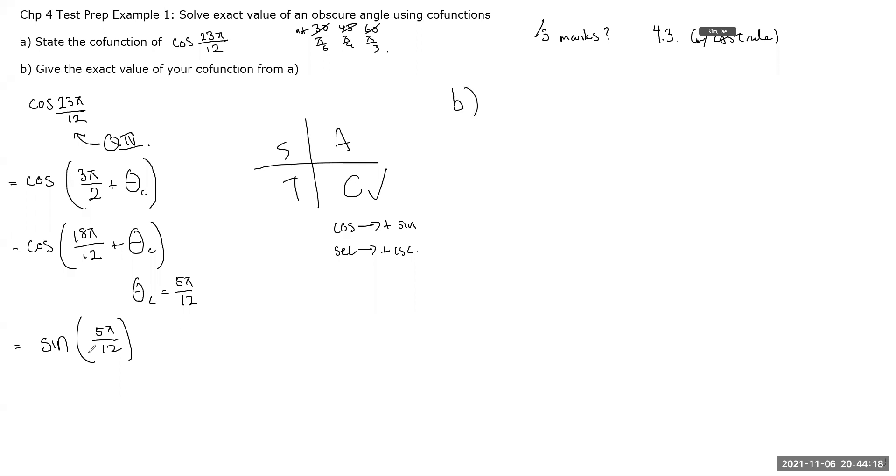Part B then asks, give me the exact value of this, so exact value of your answer from part A. Okay, well, sine 5π over 12, now there's a couple of ways you could do this, but I think the easiest way is to apply CAST rule. Notice that sine 5π over 12 is essentially just shy of 6π over 12, which is, you know, π over 2, that's 90 degrees. So, this is already in quadrant 1, okay?